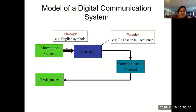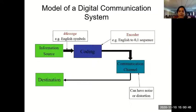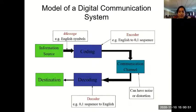The information source — for example, a message using English language symbols A to Z — will be encoded using an encoder. We are going to convert English-like symbols into a binary sequence of zeros and ones. Then when it goes to the channel, the channel can be many different things — wired or wireless. If wired, it can be a coaxial cable, a twisted pair, or fiber.